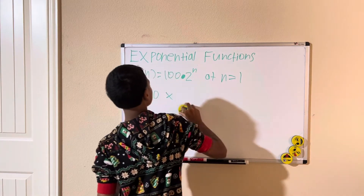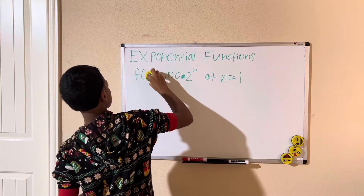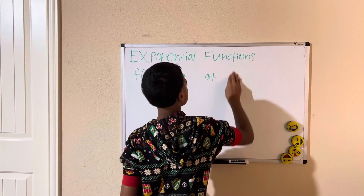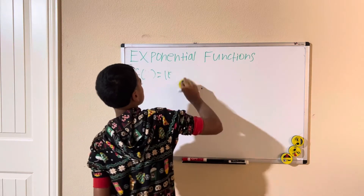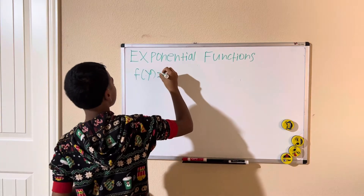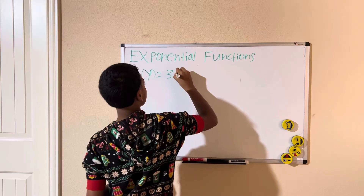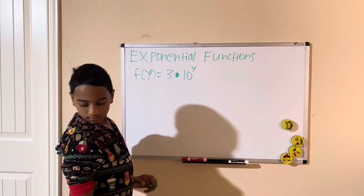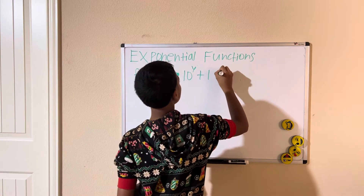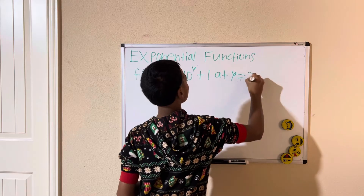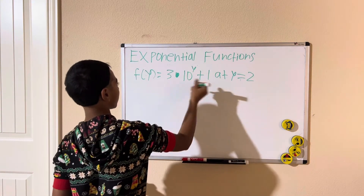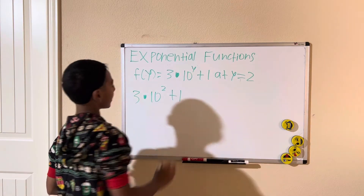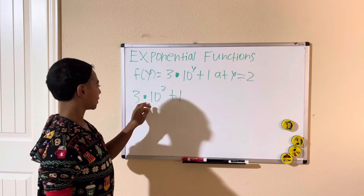Let's do a few more examples. We have f of y equals 3 times 10 to the power of y, plus 1, at y equals 2. Try this one. We put y equals 2, so it's going to be 3 times 10 squared plus 1. Now we use order of operations — PEMDAS — so exponents come first.